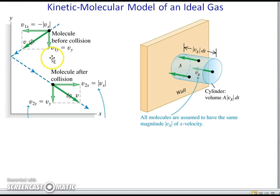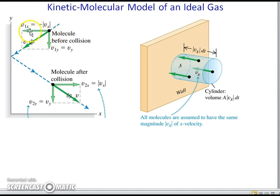In a typical collision, the velocity component parallel to the wall is unchanged, while the component perpendicular to the wall reverses direction after the collision but does not change in magnitude. We will assume that all molecules in the gas have the same x-component of velocity. This is not correct, but it will help clarify the basic idea of the model.